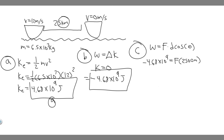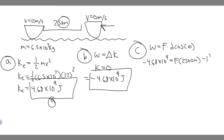Theta is the angle between where the force is applied and the direction of motion. If you imagine our ship traveling in one direction, the force is applied in the opposite direction to stop it — like on a number line. That means the angle between them is 180 degrees. The cosine of 180 is negative one. So the equation becomes 4.68 times 10 to the 9 equals force times negative 2,500. Dividing both sides by negative 2,500 — the negatives cancel — and plugging 4.68 times 10 to the 9 divided by 2,500 into the calculator gives us the force.